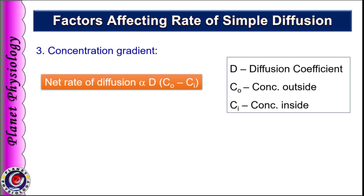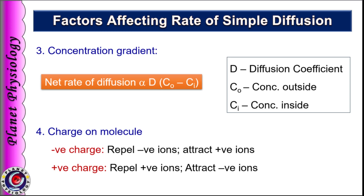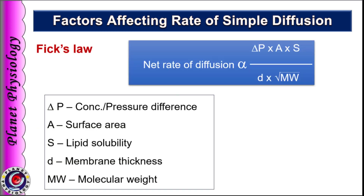The third factor affecting diffusion is the concentration gradient. Net rate of diffusion is proportional to the product of the diffusion coefficient and the concentration gradient. Additionally, rate of diffusion is affected by the charge on the molecule — the interior of the cell has negative charge and hence repels negatively charged ions and attracts cations. All these factors are expressed together as Fick's law of diffusion, which states that net rate of diffusion is directly proportional to concentration gradient, surface area of the membrane, and lipid solubility of the substance, and inversely related to membrane thickness and the square root of the molecular weight.